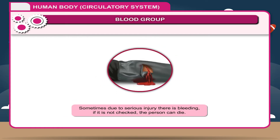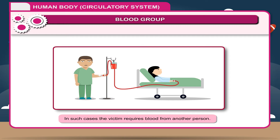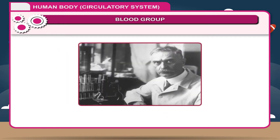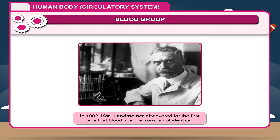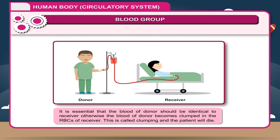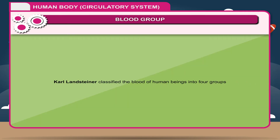Blood groups: sometimes due to serious injury there is bleeding, and if it is not checked the person can die. In such cases the victim requires blood from another person. In 1902, Karl Landsteiner discovered for the first time that blood in all persons is not identical. It is essential that the blood of the donor should be identical to that of the receiver, otherwise the donor's blood becomes clumped in the RBCs of the receiver — this is called clumping — and the patient will die.